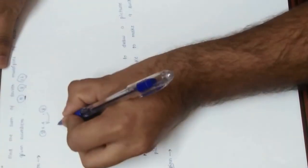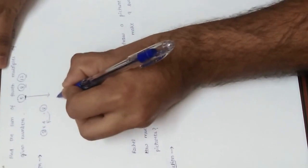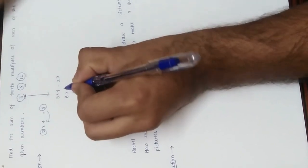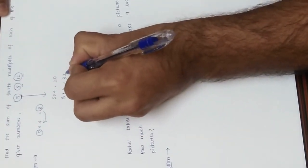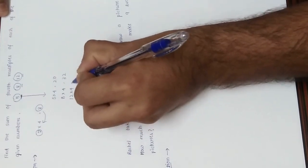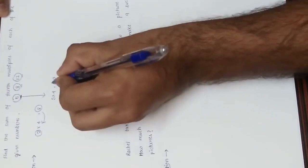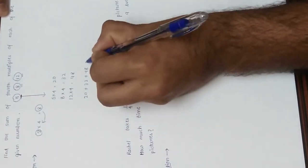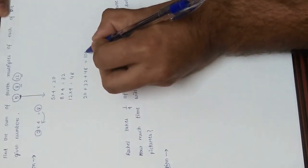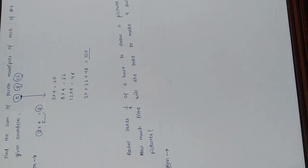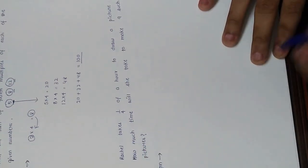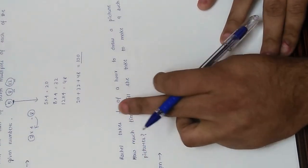The fourth multiple of 5 is 5 × 4 = 20. The fourth multiple of 8 is 8 × 4 = 32. The fourth multiple of 12 is 12 × 4 = 48. The sum of these values is 20 + 32 + 48 = 100, and that is the answer.